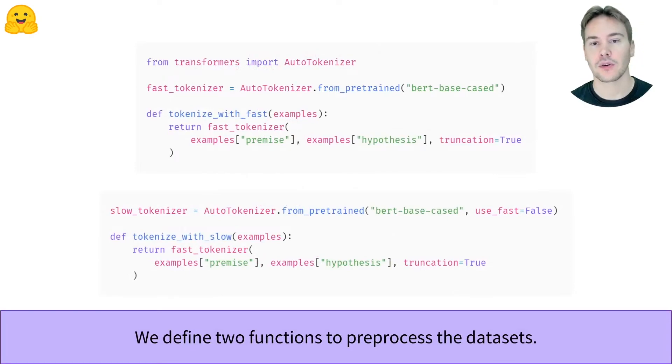We define our fast and slow tokenizer using the AutoTokenizer API. The fast tokenizer is the default when available, so we pass along useFast=false to define the slow one.